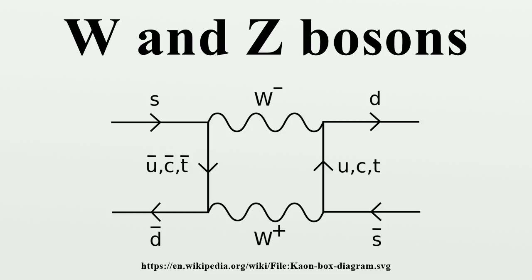Here, the neutrino simply strikes the electron and scatters away from it, transferring some of the neutrino's momentum to the electron. Since neither neutrinos nor electrons are affected by the strong force, neutrinos are electrically neutral, and the incredibly small masses of these particles make any gravitational force between them negligible, such an interaction can only happen via the weak force.